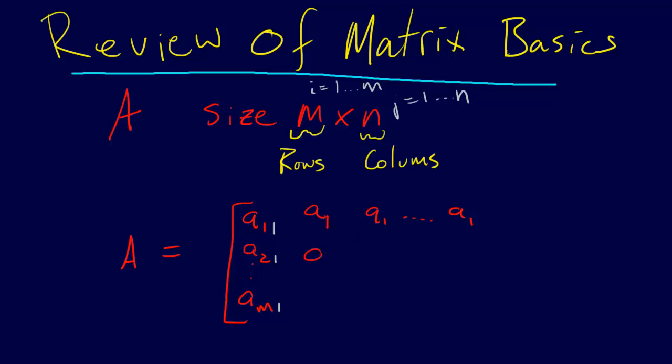So we've got A two one, A two two, and this is still going to be A two here. But when we go all the way down, this is A M one, A M two, all the way to A M N.